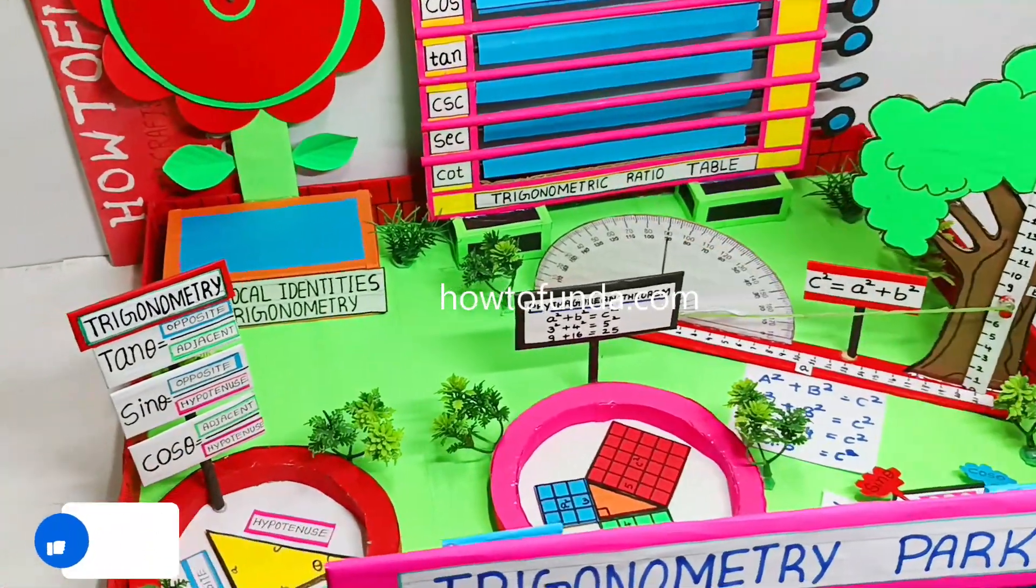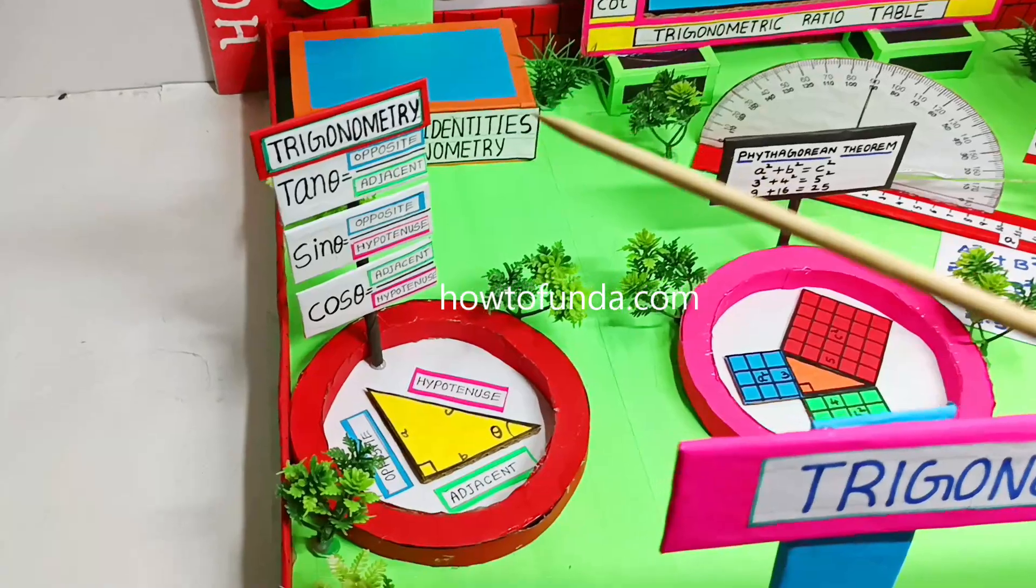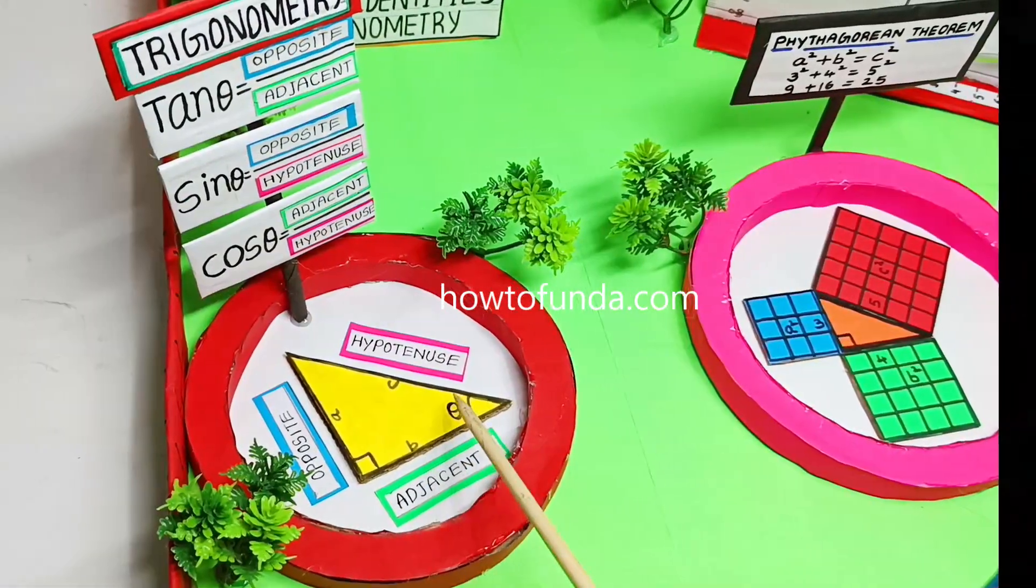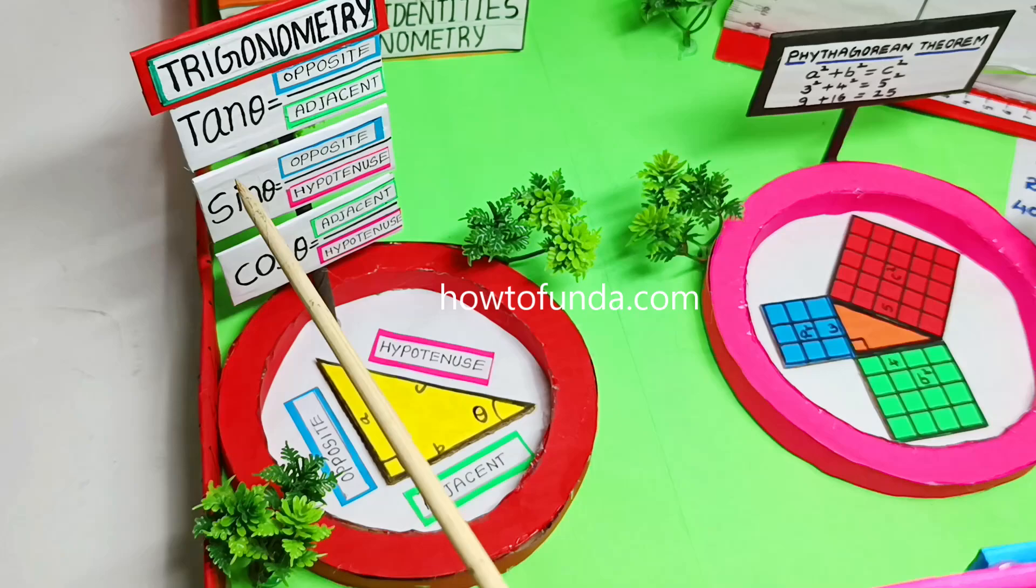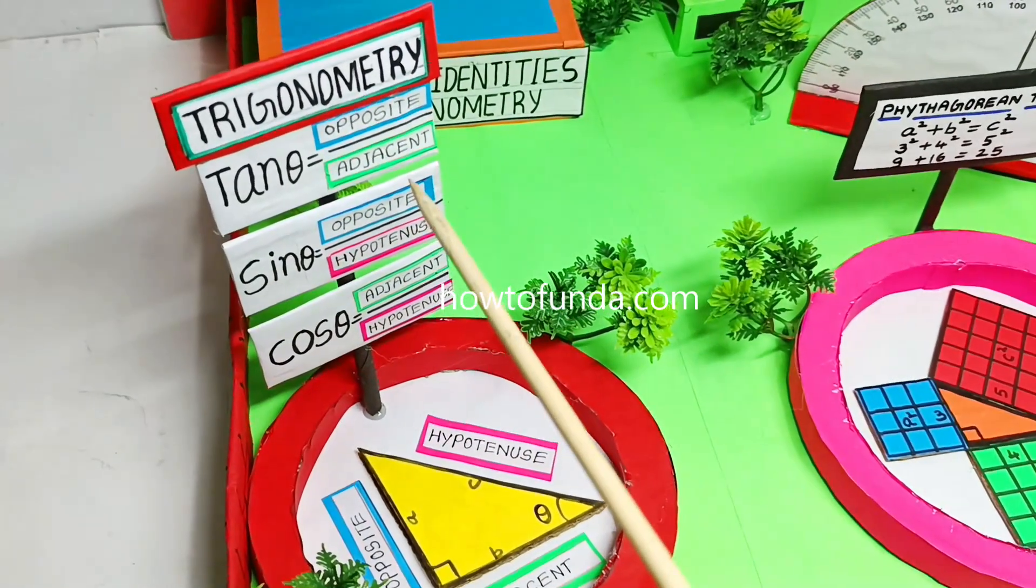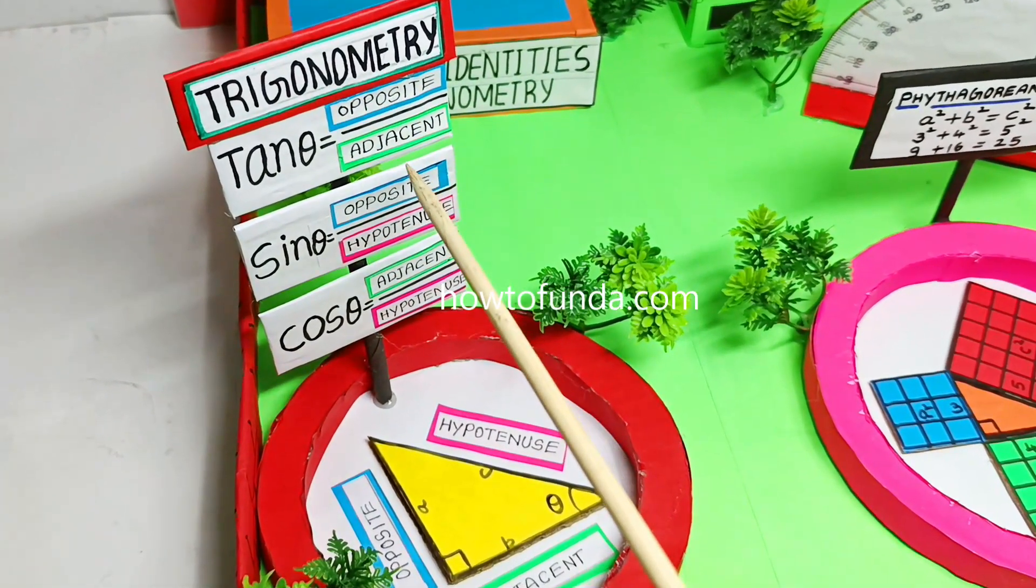We have implemented various concepts in this park. The first concept is a right angle triangle depicting tan θ, sin θ, and cos θ. You can see the opposite by adjacent is tan θ, and sin θ is opposite by hypotenuse, and cos θ is adjacent by hypotenuse.